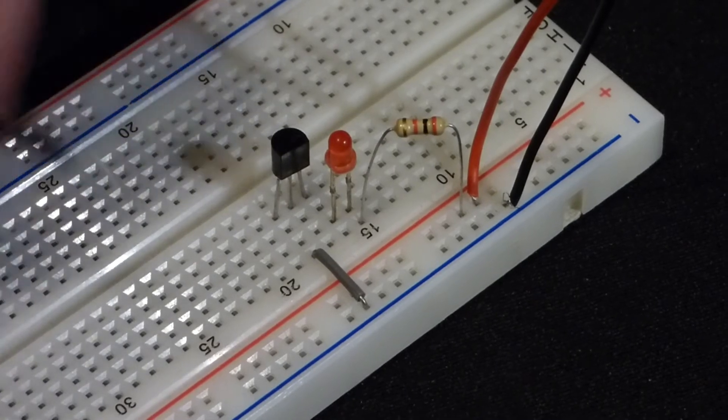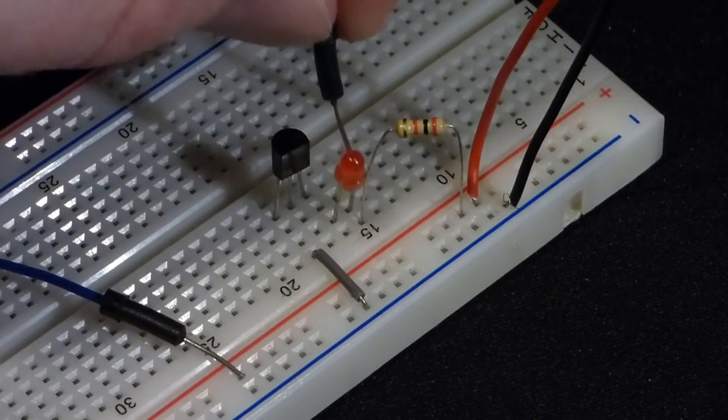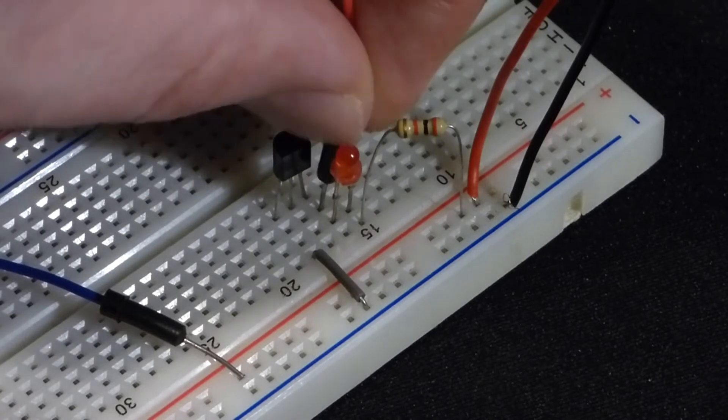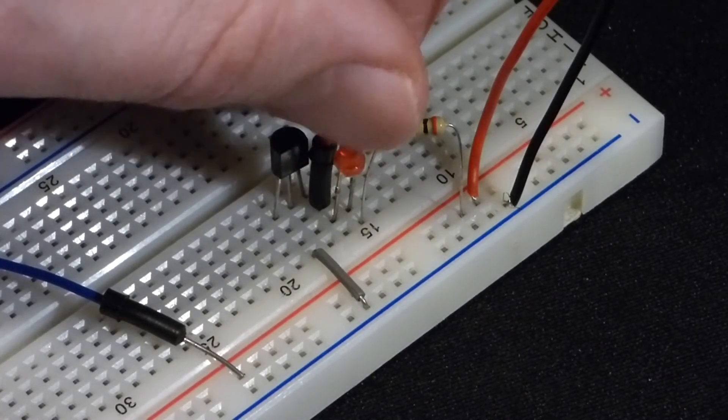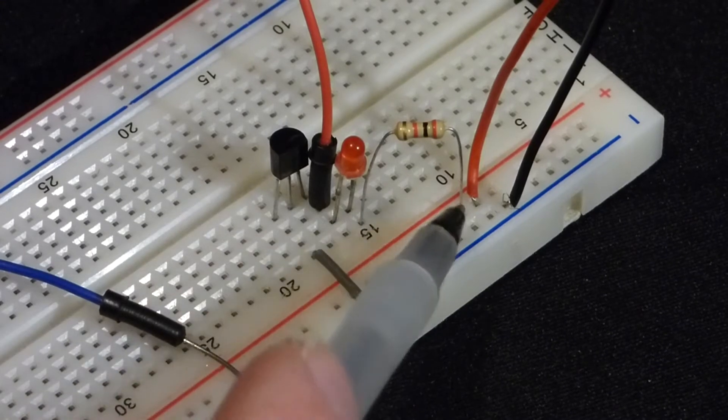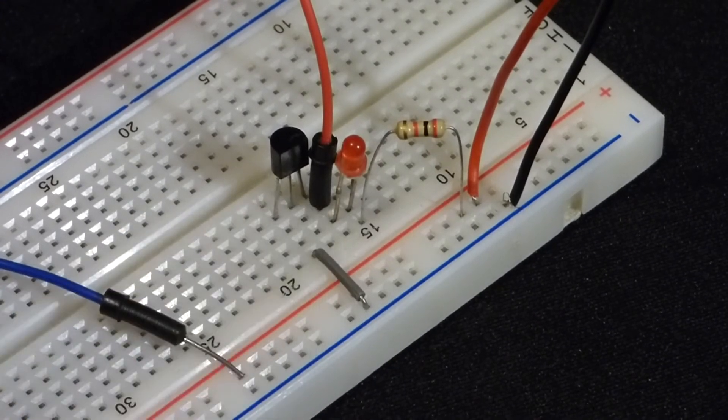So we've got a red wire and a blue wire. The red wire I'm going to put on the same row as the cathode of the LED and the collector of the transistor. So we've got the positive voltage coming there.